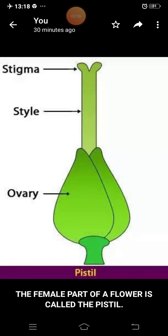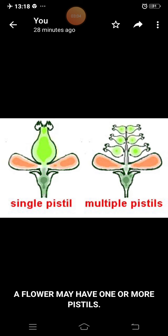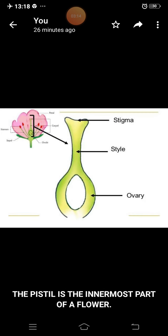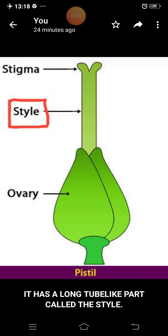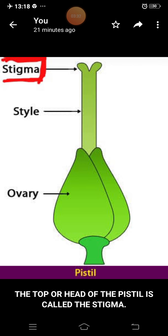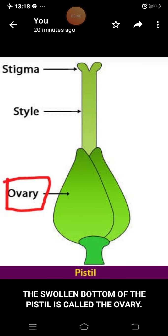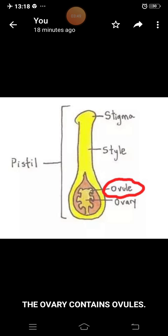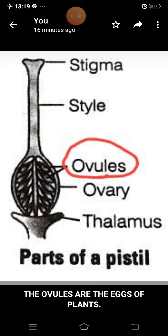The female part of a flower is called the pistil. A flower may have one or more pistils. The pistil is the innermost part of a flower. The pistil has a long tube-like part called the style. The top or head of the pistil is called the stigma. The swollen bottom of the pistil is called the ovary. The ovary contains ovules. The ovules are the eggs of plants.